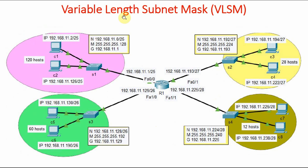And what about variable length subnet mask? Here it is showing a mask of slash 25, here it is slash 26, here it is slash 27, and here it is slash 28. That means in variable length subnet mask, we are doing the subnetting in such a way that the mask used is different for each subnet.